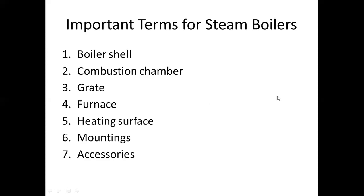Important terms for steam boilers. First: boiler shell. It is made up of steel plates bent into cylindrical form and riveted or welded together. The ends of the shell are closed by means of end plates. A boiler shell should have sufficient capacity to contain water and steam.